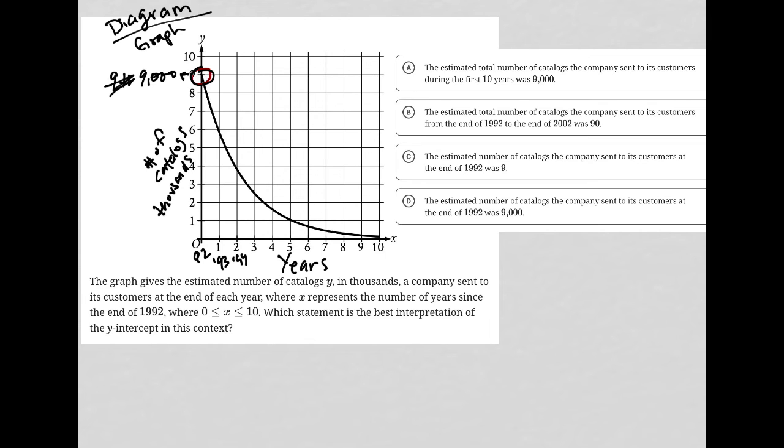Choice A, the estimated total number of catalogs the company sent to its customers during the first 10 years. No, not during the first 10 years, just in 1992. Choice B, the estimated total number of catalogs the company sent to its customers from the end of 92 to the end. No, that's not true.